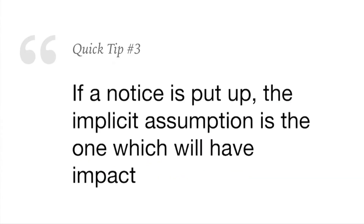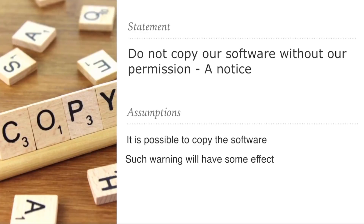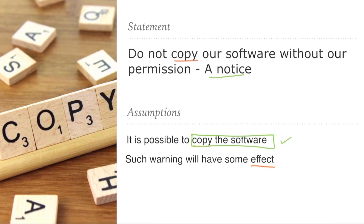Here is the third quick tip: if a notice is put up, the implicit assumption is the one which will have impact. Example statement — a notice: do not copy our software without our permission. Assumptions: first, it is possible to copy the software; second, such a warning will have some effect. The first assumption is strong — the software is able to be copied, which is the reason the notice was given. The second assumption is also strong — if they believe there is an effect, then only they will give out a notice. Therefore, both are valid.